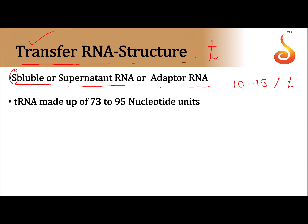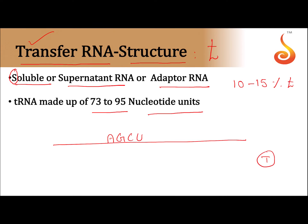tRNA is made up of 73 to 95 nucleotide units. tRNA is made up of a single strand, consisting of adenine, guanine, cytosine, and uracil. Thymine is absent in tRNA.